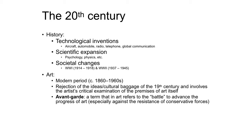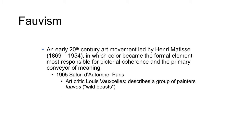A movement in Western art that developed in the second half of the 19th century sought to capture the images and sensibilities of the age. This art goes beyond simply dealing with the present and involves the artist's critical examination of the premises of art itself. This begins as a rejection of the ideas and cultural baggage of the 19th century. It includes many different and distinct styles and often aligns itself more commonly with the term avant-garde — a term that in art refers to the battle to advance the progress of art, especially against the resistance of conservative forces.